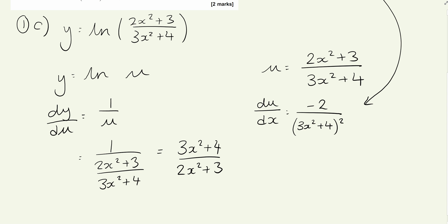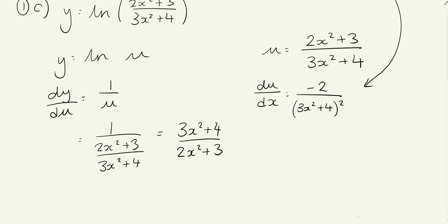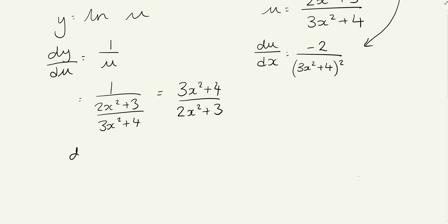dy/dx is found by doing dy/du multiplied by du/dx. That's the definition of the chain rule. We're going to have (3x² + 4)/(2x² + 3) multiplied by -2/(3x² + 4)².